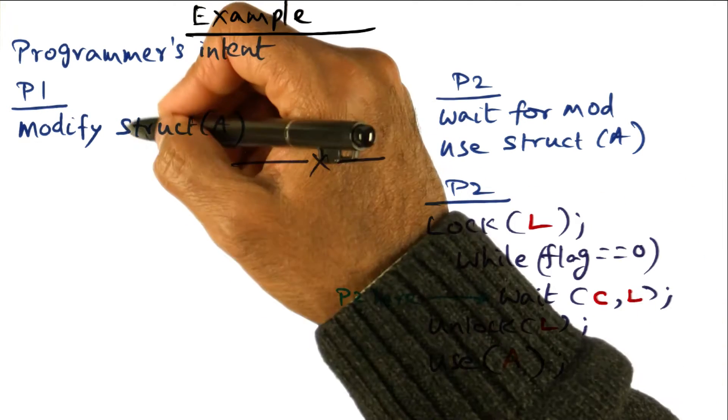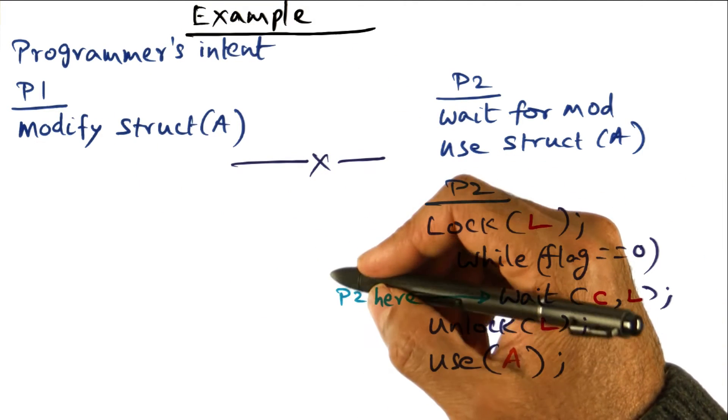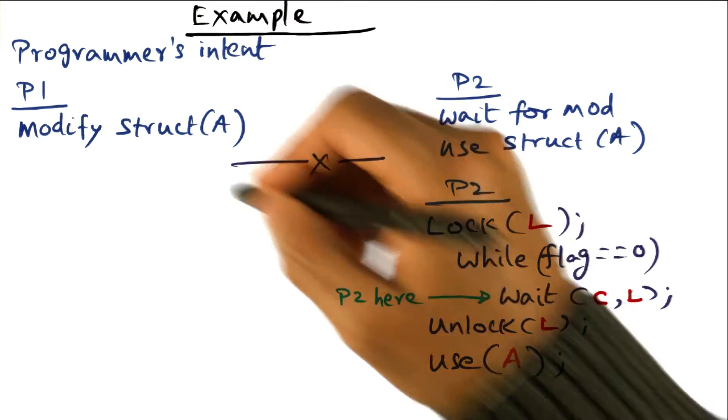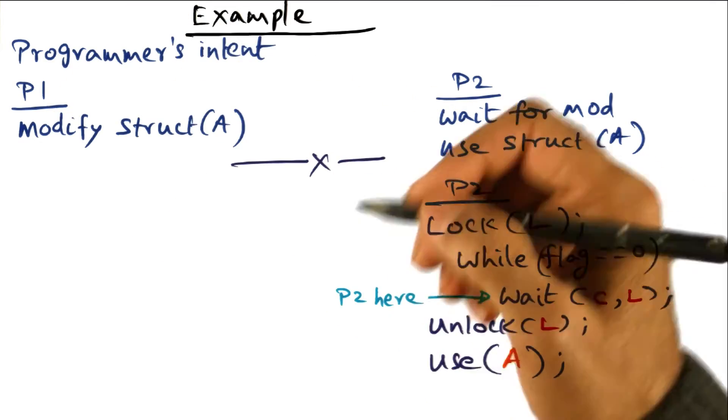Who's going to do that? Well, of course, P1 is the guy that is modifying the structure, so it's the responsibility of P1 to signal him. So let's see what happens.